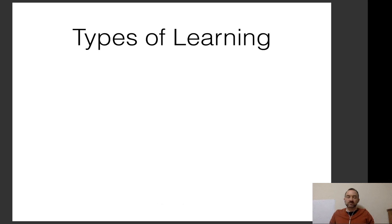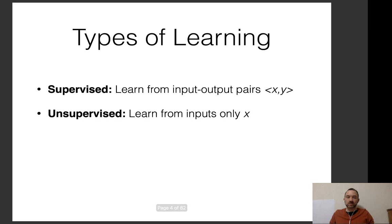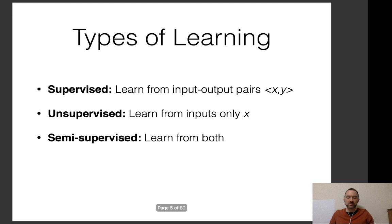To give an overview of some of the types of learning we've covered so far: we have supervised learning, where we learn from input-output pairs; unsupervised learning, where we learn from inputs only — for example, training a language model; and semi-supervised learning, where we do both — learning from input-output pairs while also doing some processing over unsupervised data.